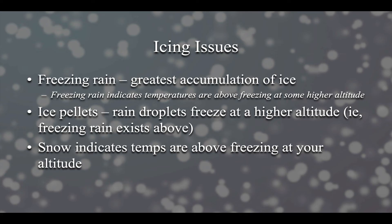Ice pellets are not like freezing rain. They're already frozen. They hit you as frozen pellets, meaning that rain is actually freezing at a higher altitude above you, which might indicate that freezing rain actually exists above you. And then snow indicates temperatures are above freezing at your altitude. Believe it or not, snow is not what we want either. It's not good, but it's better than ice pellets. It's better than freezing rain, and it indicates that your temperatures are above freezing at the altitude that you are at.